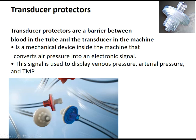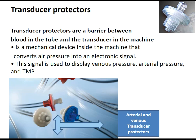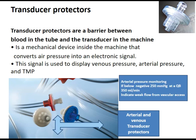The transducer protectors act as a barrier between the blood in the tube and the transducer in the machine. It is a mechanical device inside the machine that converts air pressure coming from the blood circuit into an electronic signal. This signal is used to display venous pressure, arterial pressure, and to calculate transmembrane pressure. Arterial pressure monitoring below negative 250 mmHg at a QP of 350 mL/min indicates weak flow from the vascular access.